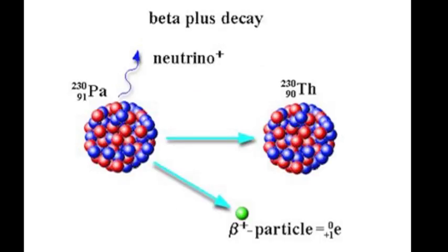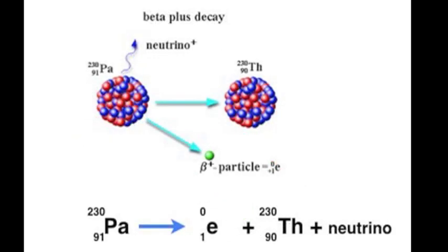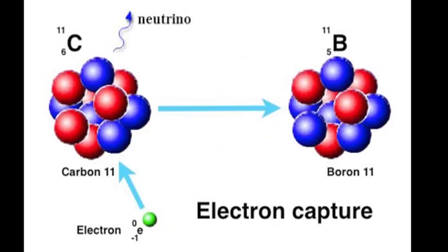Beta plus or positron emission can occur when the neutron-proton ratio is too low. In effect, a proton spits out a positron, with the major part remaining behind as a neutron. The production of a positron, however, requires a significant amount of energy. Once again, examine the balance of nucleon number on both sides of the equation and proton number on both sides of the equation.